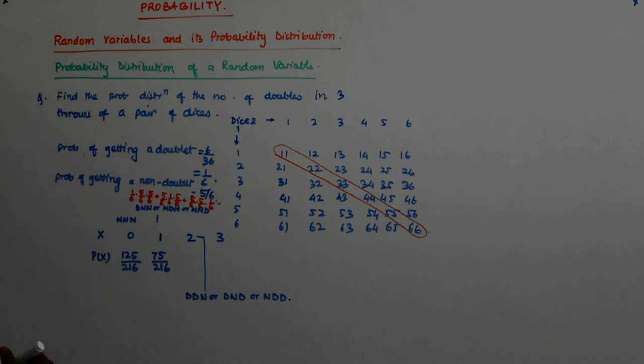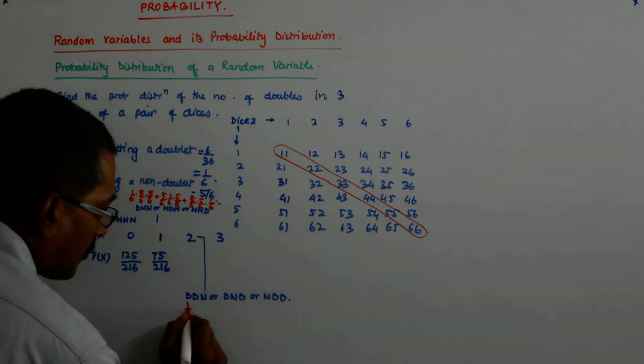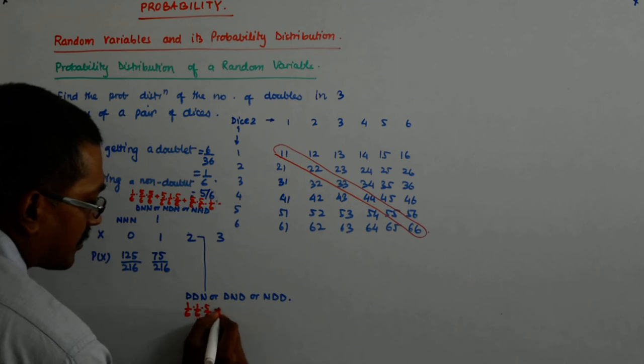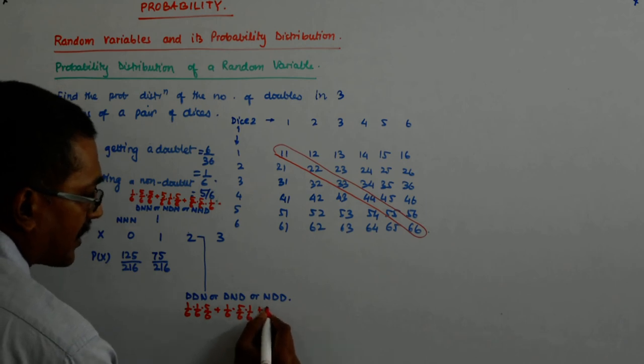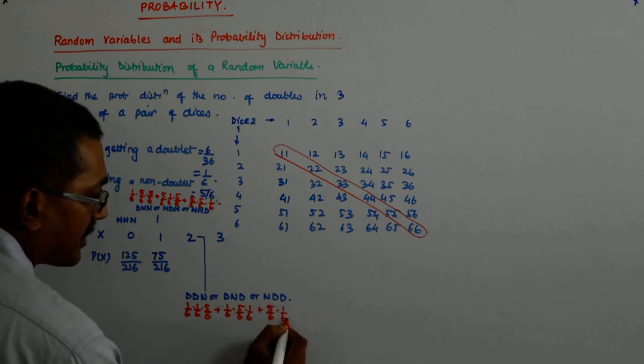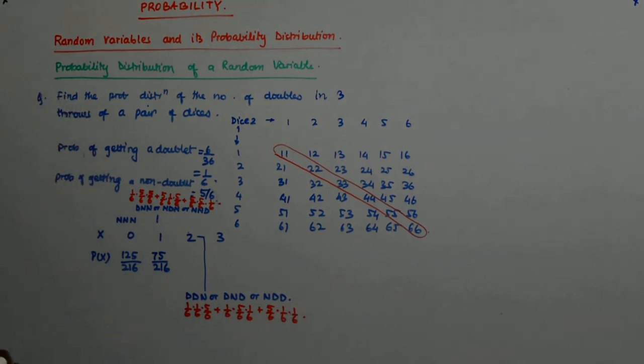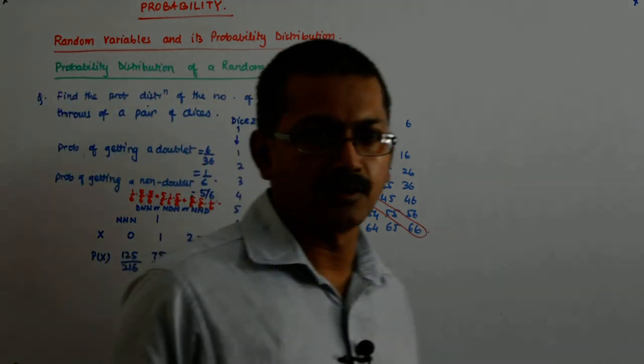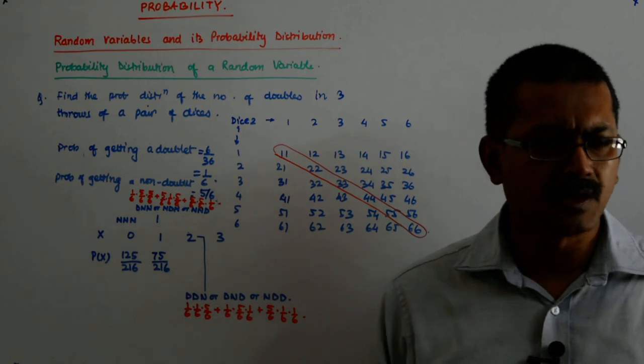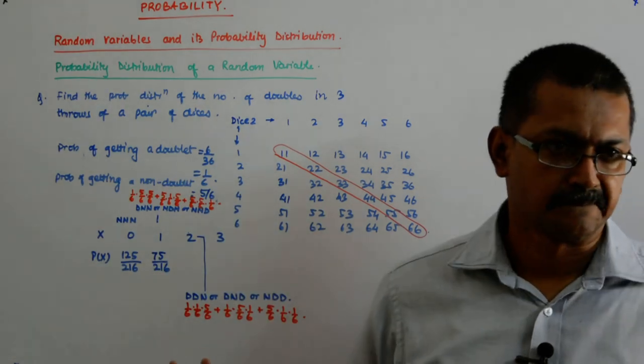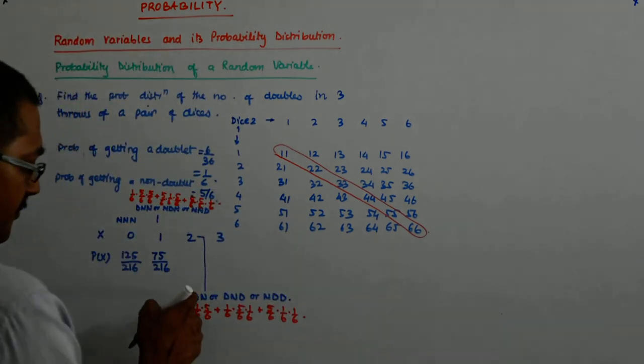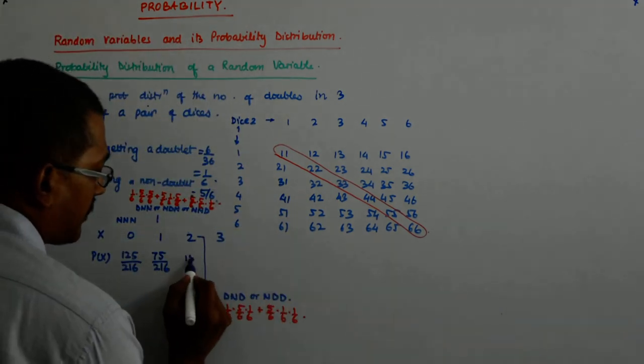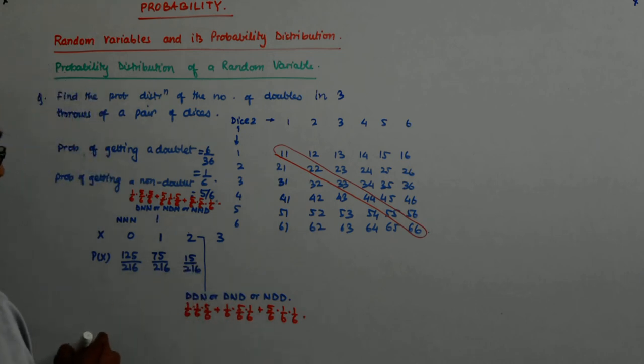And this is what? What is the probability? So one by six, one by six, five by six, plus one by six, five by six, one by six, plus, plus five by six, one by six, one by six. So this is five. Obviously you will have to work it out and show. How will you, how will they give you marks? Otherwise it is a sitter. So five upon two sixteen, and so it is actually fifteen upon two sixteen.